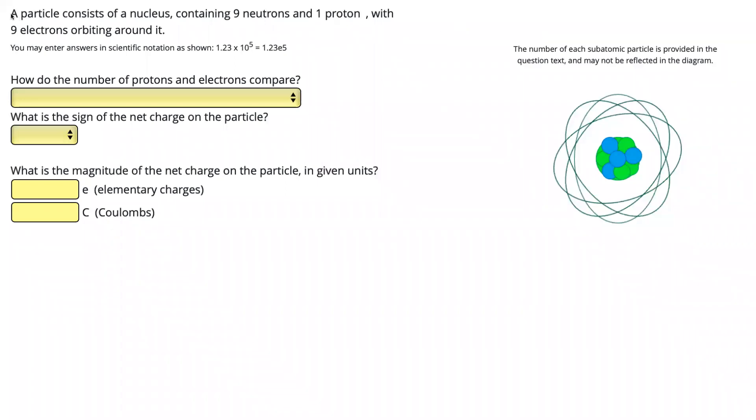In this problem, we have a particle that consists of a nucleus containing nine neutrons and one proton, with nine electrons orbiting around it.